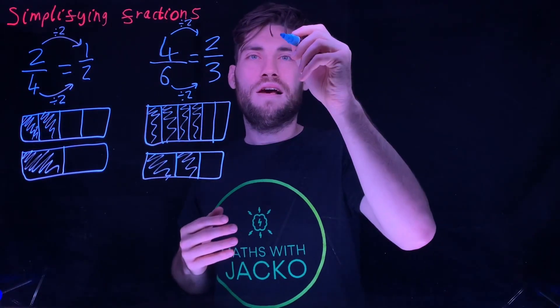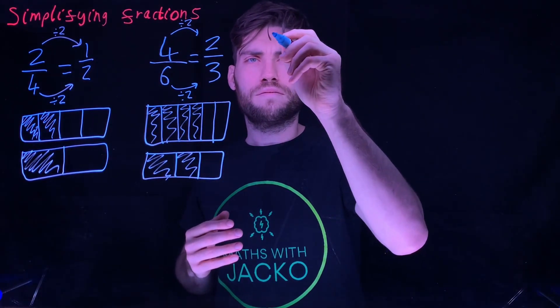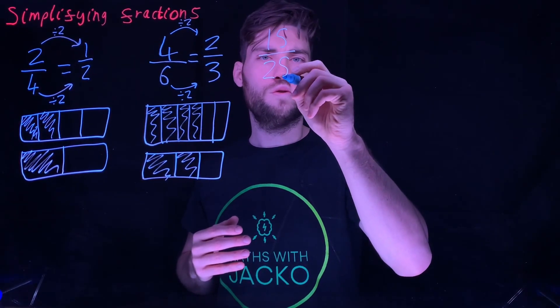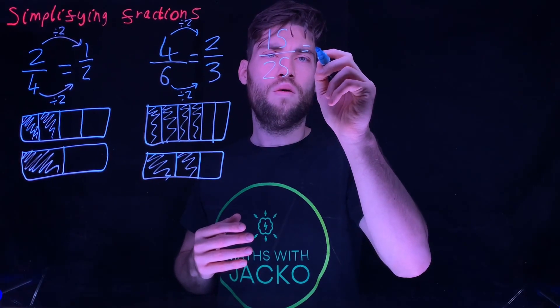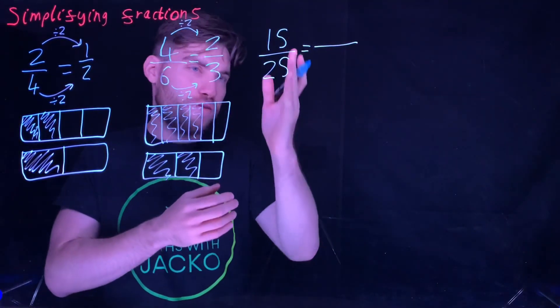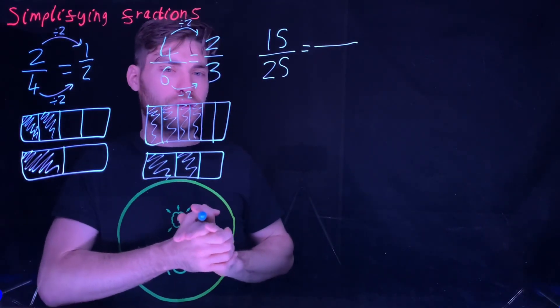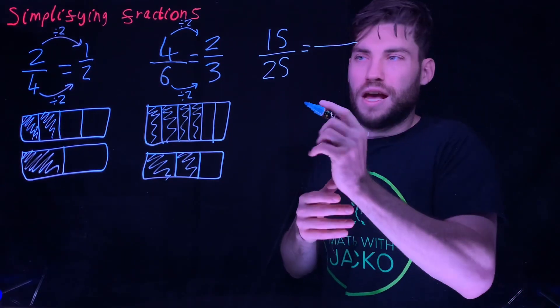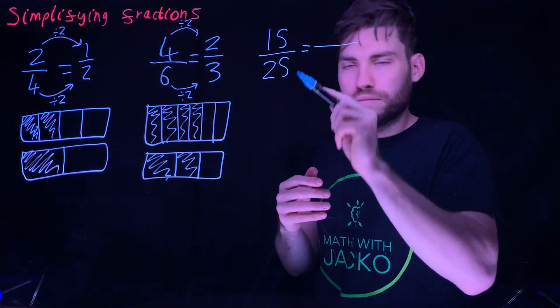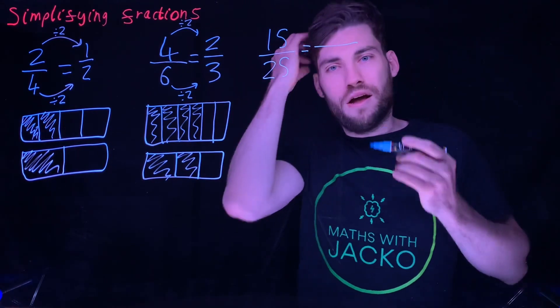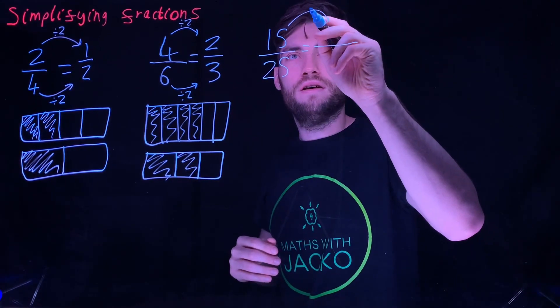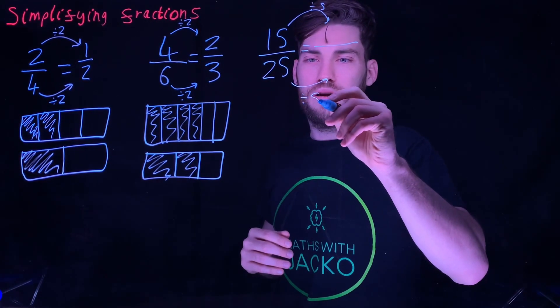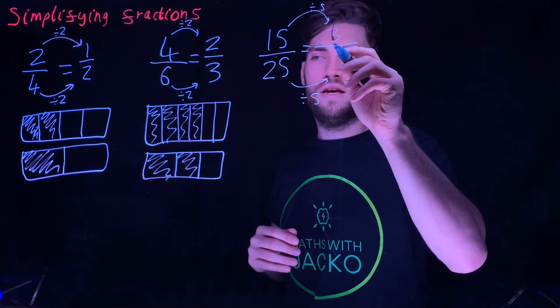Let's say we had 15 over 25. We haven't got even numbers now. Pause the video, see if you can simplify that fraction. What number goes into 15 and 25? Hopefully we've seen that five does. Any number that ends in a five, five goes into it. Divide the numerator by five, divide the denominator by five, and you get three fifths.